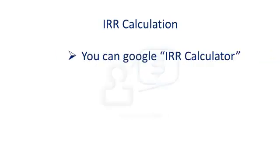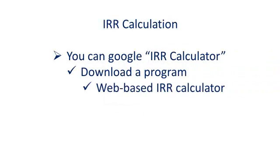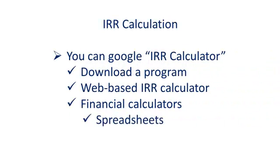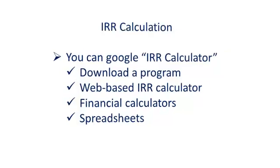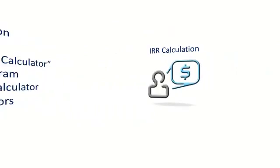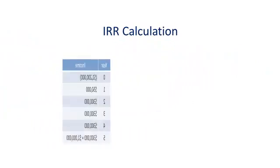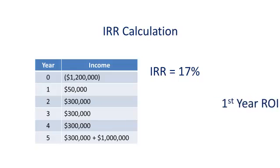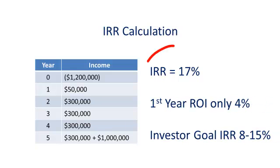You can Google IRR calculator and download a program, or use a web-based IRR calculator, where most financial calculators can also figure IRR. Also, the latest versions of Excel and other spreadsheets can also calculate IRR. So when we plug the numbers from our t-bar into our IRR calculator, we get a multi-year internal rate of return of 17% per year.